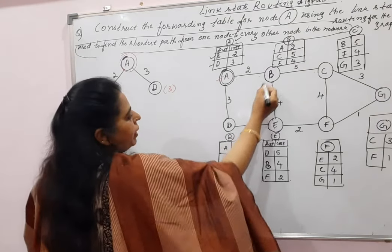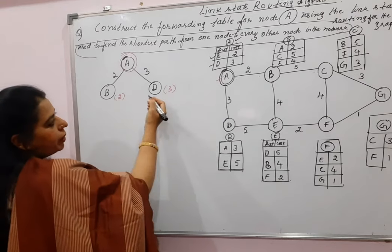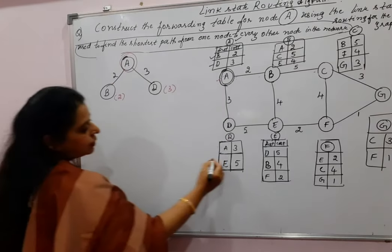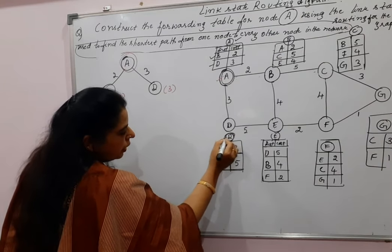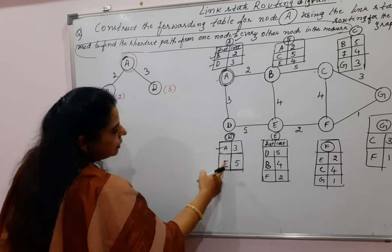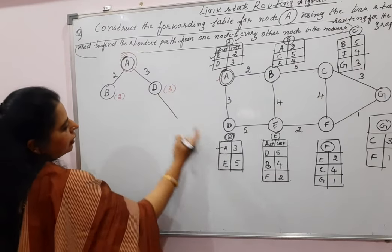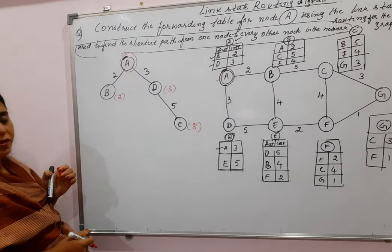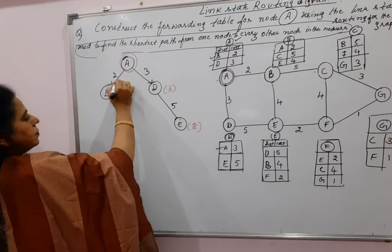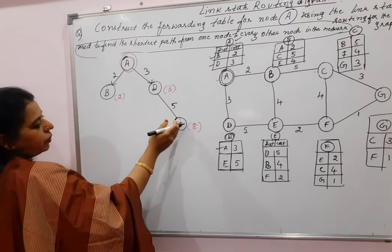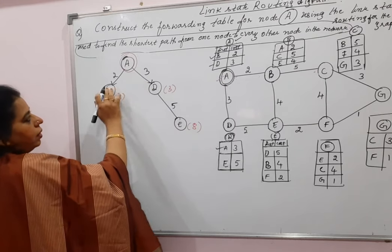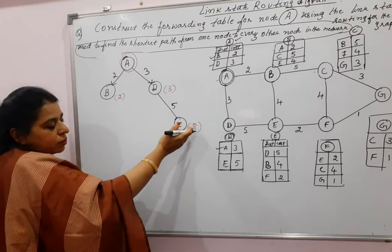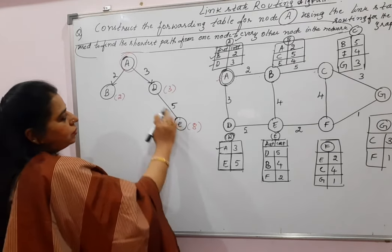Next, process nodes B and D. Starting with D: it is connected to A and E. A is already visited, so only E is added. D to E costs 5, so A to E costs 3 + 5 = 8. This is a temporary value — we keep it pending because A might find an alternate shorter path to E. Now visit node B: it is connected to A, C, and E. A is already visited. B to C costs 5 and B to E costs 4, so A to C = 2+5 = 7 and A to E = 2+4 = 6. Comparing the two paths to E: 8 vs 6. The cost of 6 is lower, so the path via D giving cost 8 is deleted.